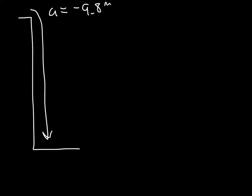Well, you can always write on a free fall problem. One thing you can always write is acceleration is equal to negative 9.8 meters per second squared.